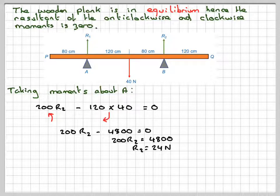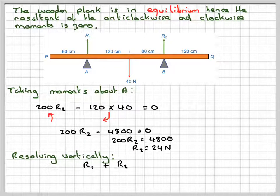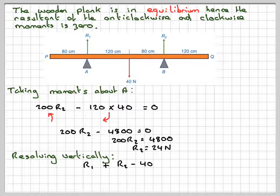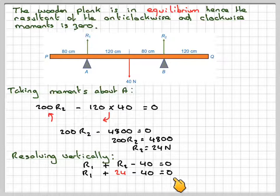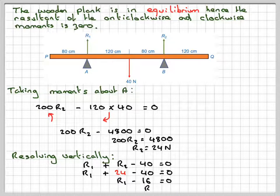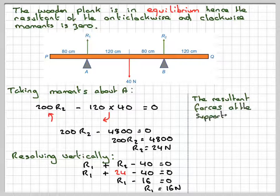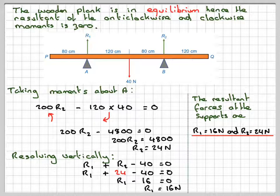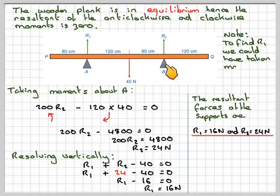Now we've got two ways which we can now proceed. Resolving vertically, we have R1 plus R2 minus 40 newtons is equal to zero, because the whole thing is in equilibrium. And because we know that R2 is 24 newtons, then we've got R1 plus 24 minus 40 is equal to zero. R1 minus 16 is equal to zero, therefore R1 is equal to 16 newtons. And therefore the resultant forces at the supports are R1 is 16 newtons and R2 is 24 newtons. Now we should also note, instead of resolving vertically here, we could have just taken moments about point B.